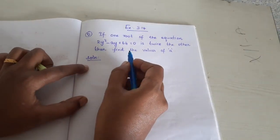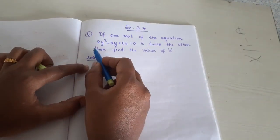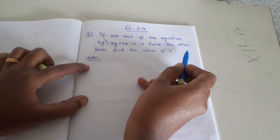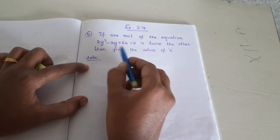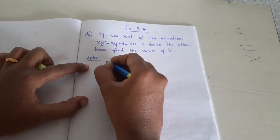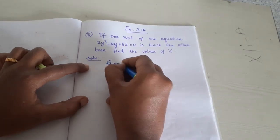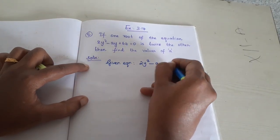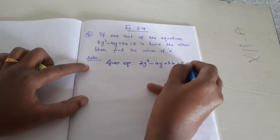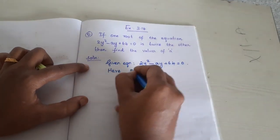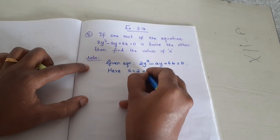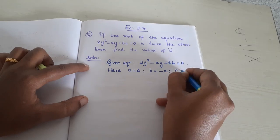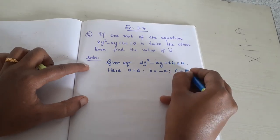Listen, dear students. Exercise 3.14, fifth problem. If one root of the equation is twice the other, find the values of a. The given equation is 2y² minus ay plus 64 equal to 0. Here, the value of a is 2, b is equal to minus a, and c is the constant term — here 64.